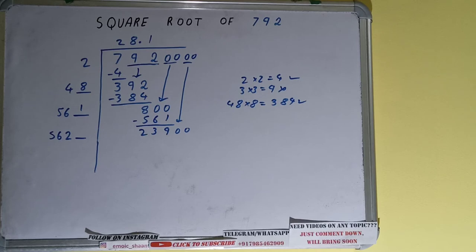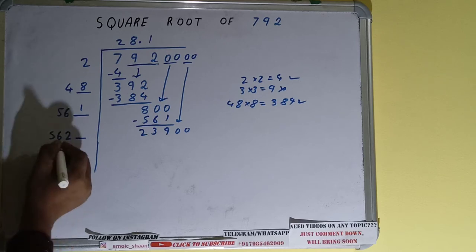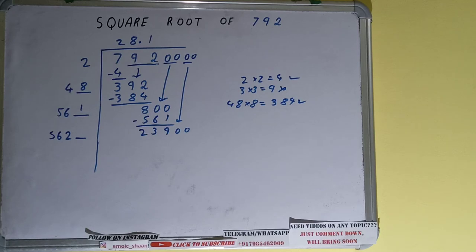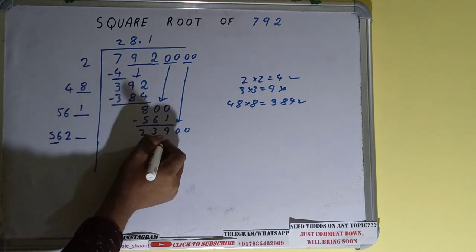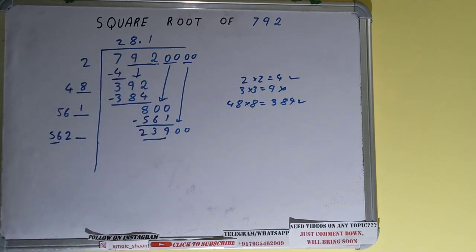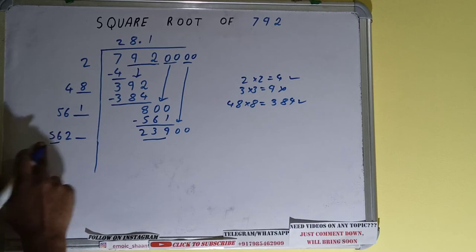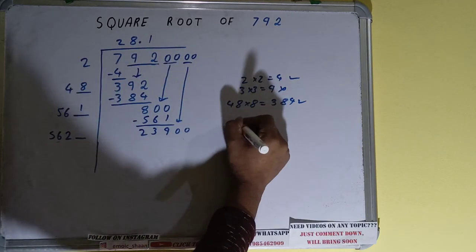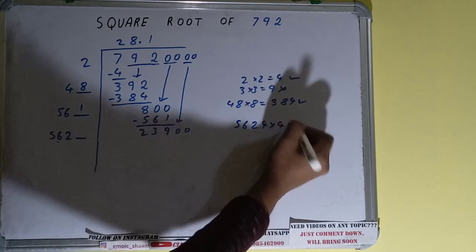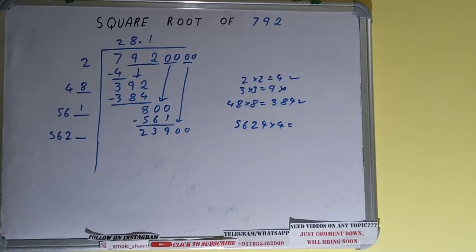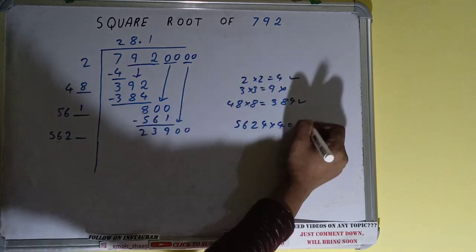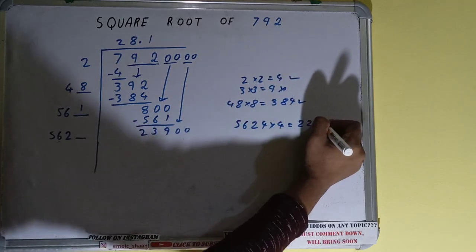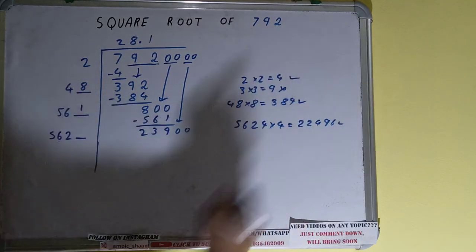We can try, let's say 6 for the 56 or so. Let's compare this with 239. So 56 five times is 280, 56 four times is 224, so we can try four times. So 5624 into 4 we can try. It will be 22,496. That is good to take.